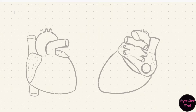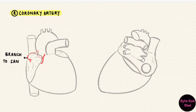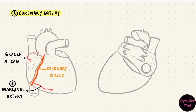Let's start with the right coronary artery. It emerges from the right aortic sinus and travels between the right auricle and the ascending aorta. It gives off one branch to the sinoatrial node — most of the time the sinoatrial artery comes from the right coronary artery, though there can be variations. The right coronary artery then travels through the coronary sulcus in the groove between the right atrium and the right ventricle. Once it reaches the inferior margin, it gives off the right marginal artery, which goes towards the apex of the heart.